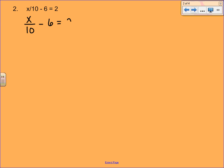We're going to start by undoing subtraction, so we're going to add 6 to both sides. The 6s cancel. Bring down the x over 10. 2 plus 6 gives us 8.